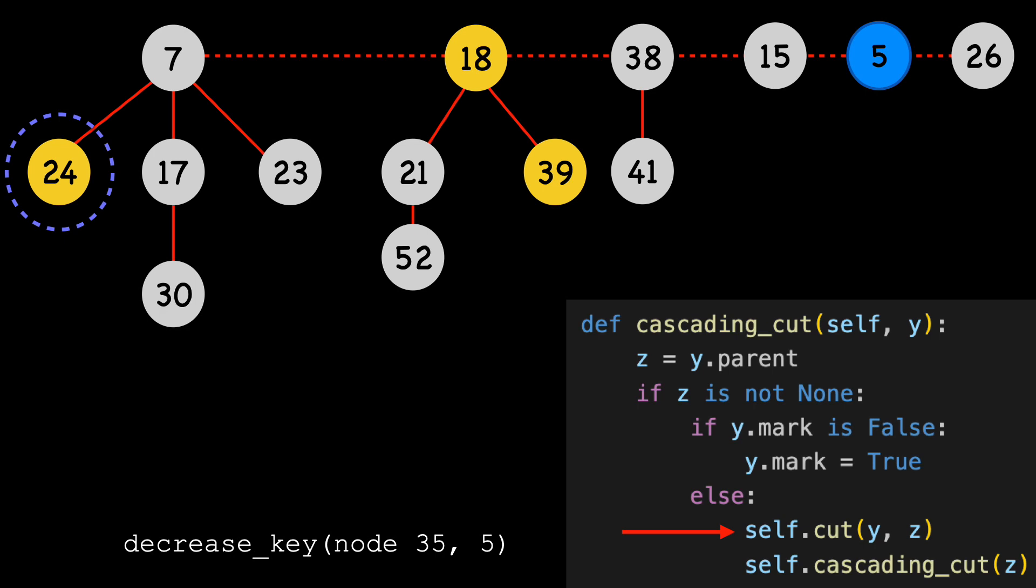We call cascading cut again, this time with node 24. We store a pointer to its parent, which I'll color green. Again, the parent is not none, and the node is marked, so we cut it and move it to the end of the root list.